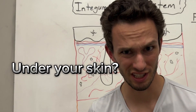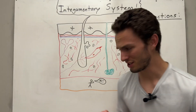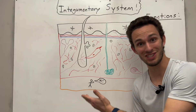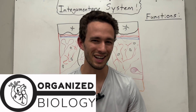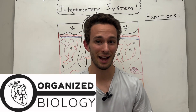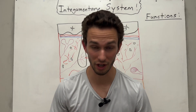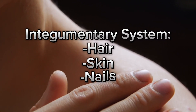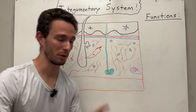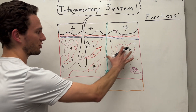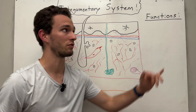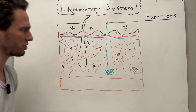Has anybody ever gotten under your skin before? Because if they have, they're right here, because this is your skin. Hey everybody, Organized Biology here, and today I'm quite literally going to get under your skin. We're going to talk about the specific structures in the integumentary system, which deals with your hair, skin, and nails, and I'm going to point out the very important structures inside of it that give your skin all of its vital function.